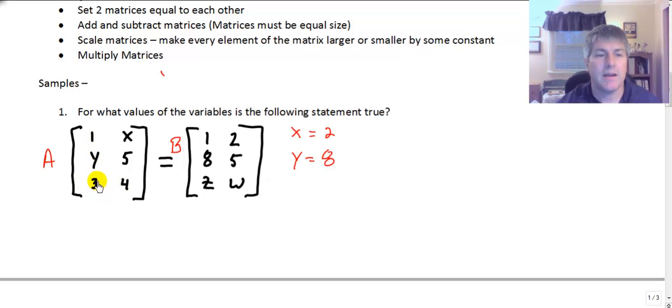In row 3 column 1, 3 corresponds to the Z. So then I know Z is 3. And likewise, we know that W is 4. So X is 2. Y is 8. Z is 3. W is 4. Those variables correspond with the elements in A or B.